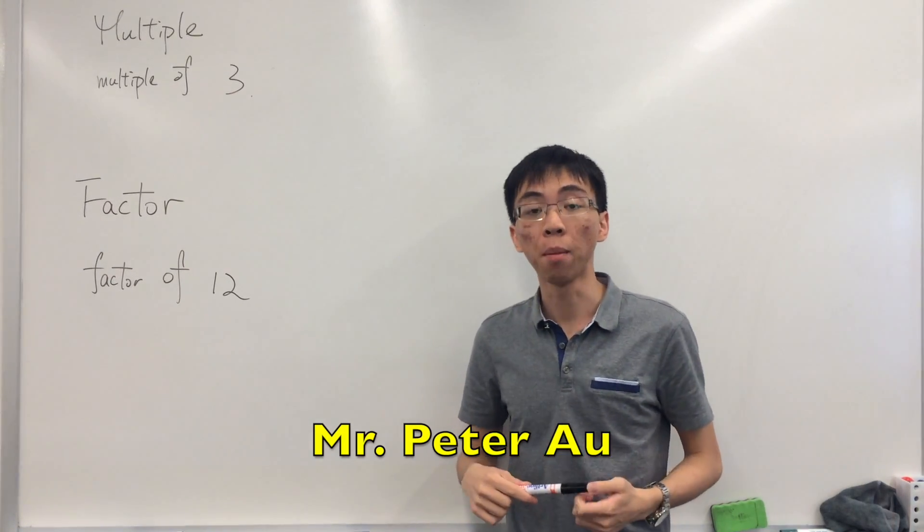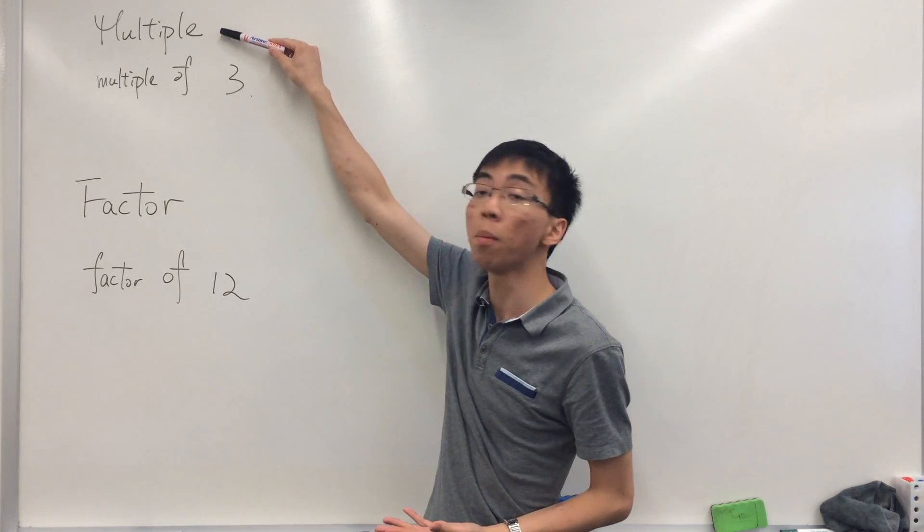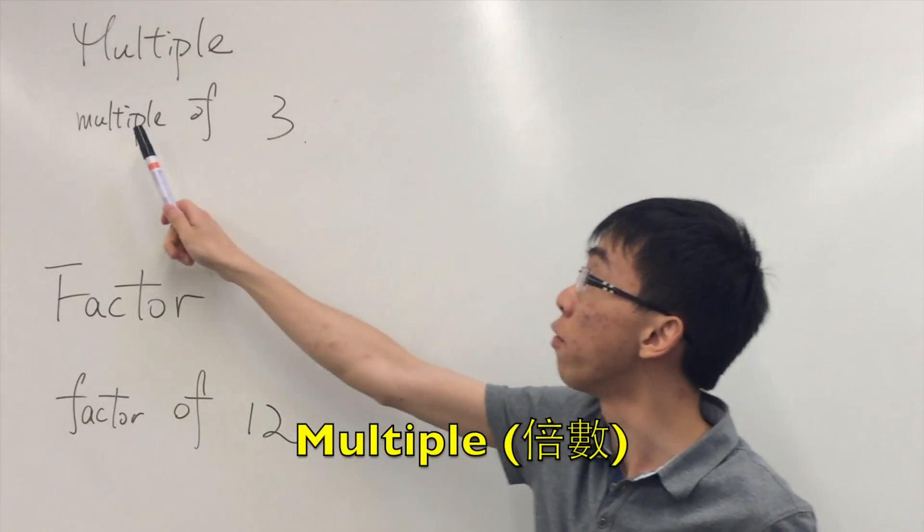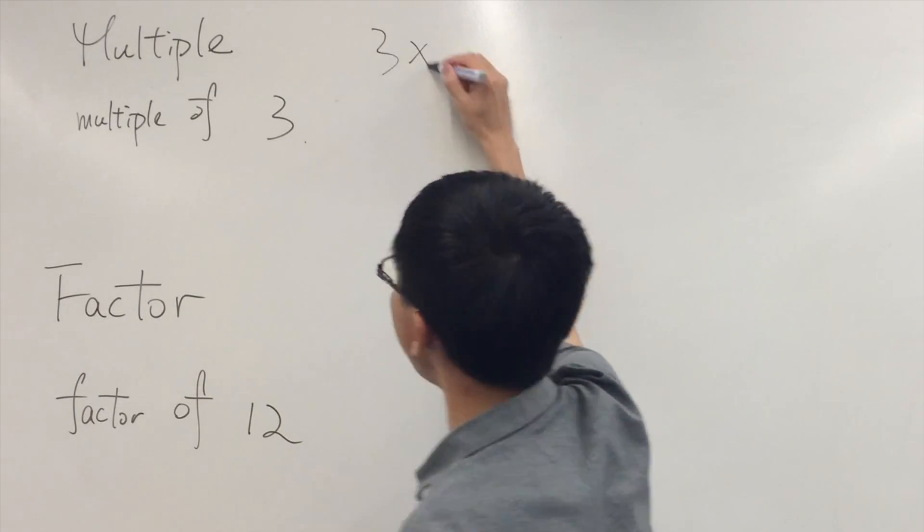Today we will talk about some mathematics language. The first English word is called a multiple. What is the meaning of multiple of three? It just means that three times a number.